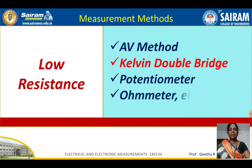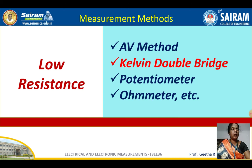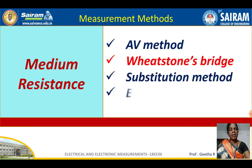For measurement methods: to measure low resistance, you have the ammeter-voltmeter method, Kelvin double bridge method, potentiometer method, and ohmmeter method. As per the syllabus, the Kelvin double bridge method is the prescribed one, and you will learn about it. For medium resistance, methods include the ammeter-voltmeter method, Wheatstone bridge, and substitution method. As per the syllabus, you are going to study the Wheatstone bridge and how it is used to measure medium resistance.